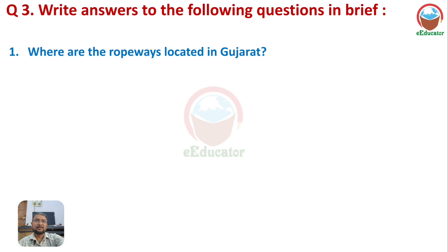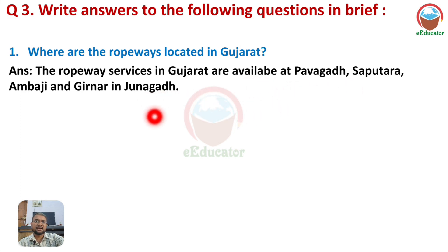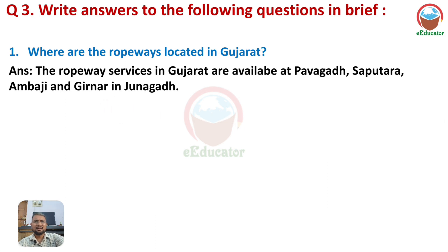Question: Where are the ropways located in Gujarat? Ropway services in Gujarat are available at Pavagadh, Saputara, Ambaji and Girnar in Junagadh.